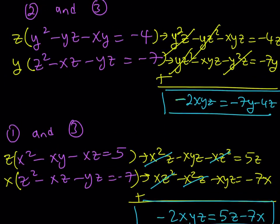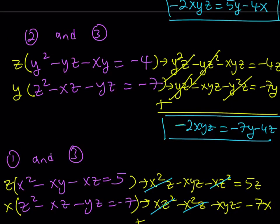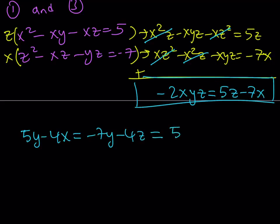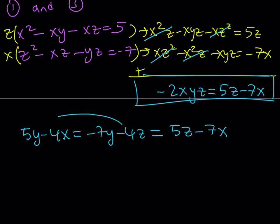We can number those new equations 4, 5, and 6. Since everything equals negative 2xyz, they're all equal to each other: 5y minus 4x equals negative 7y minus 4z, and that equals 5z minus 7x. I'm going to isolate z from both pairs. Taking the first pair: move 4z to the left, add 4x to both sides, subtract 5y — that gives 4x minus 12y equals 4z, so dividing both sides by 4, z equals x minus 3y.